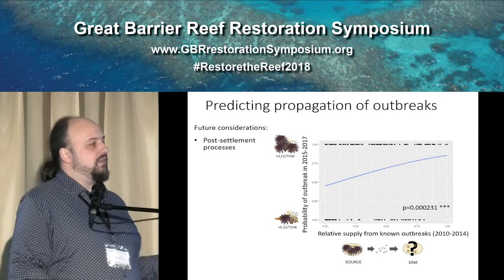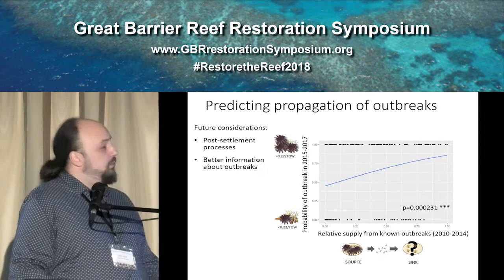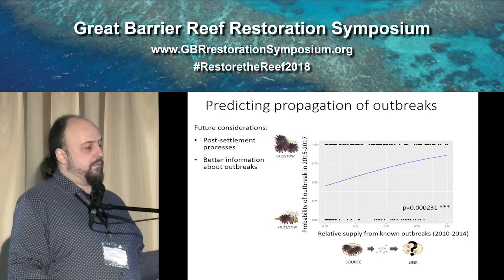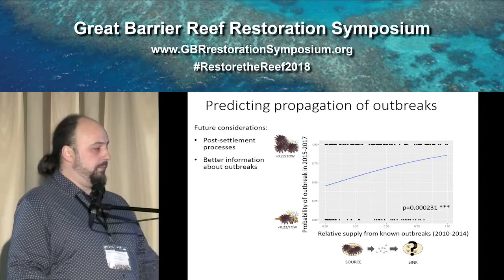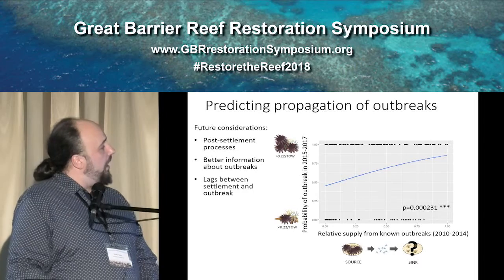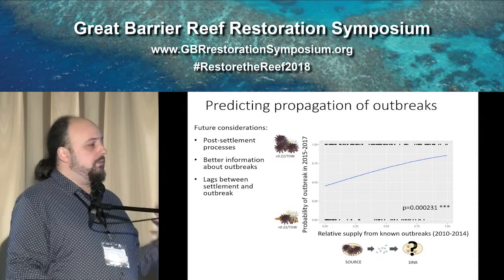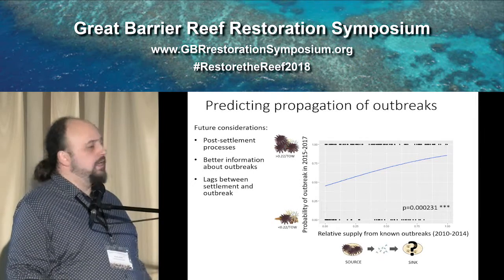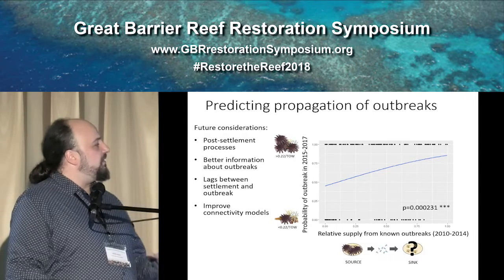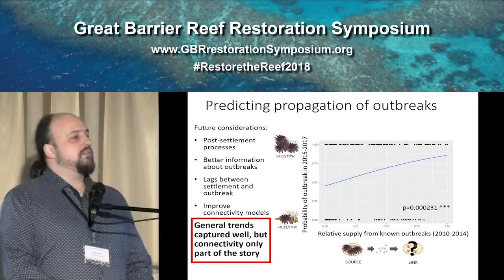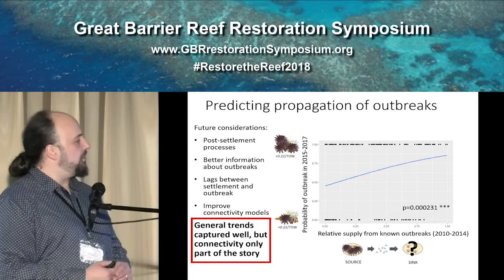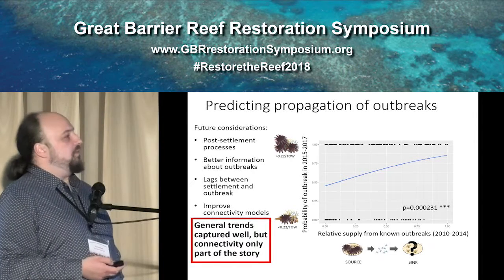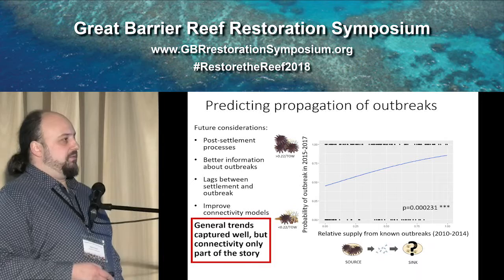For example, these models don't incorporate post-settlement processes yet. We need better information about outbreaks — sometimes COTS came from reefs that hadn't been surveyed but had outbreaks and propagated to downstream reefs. There's also the possibility that reefs were surveyed before an outbreak could develop, so we say they don't have outbreaks when they actually do. The take-home message is that general trends in the model in terms of propagation of outbreaks are captured well, but connectivity is only part of the story — and this is pretty good given that these are just connectivity models.